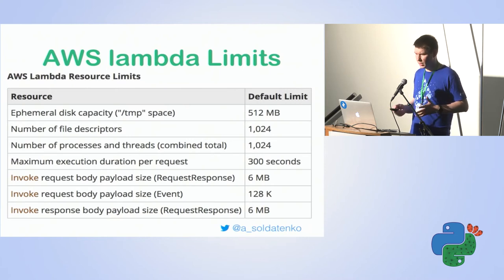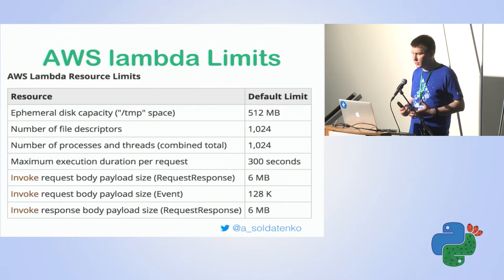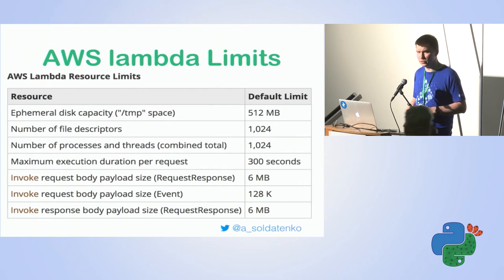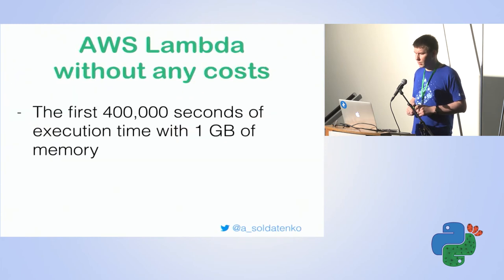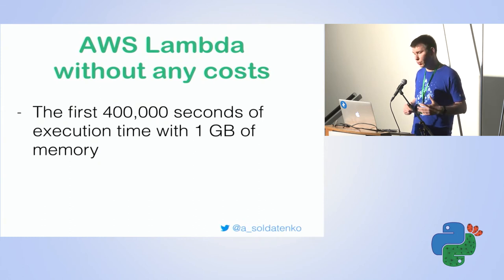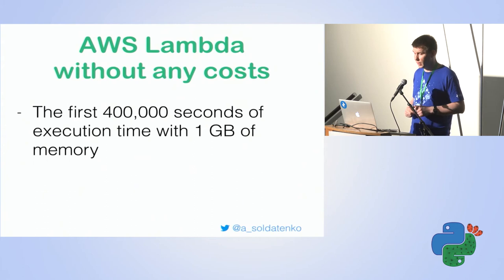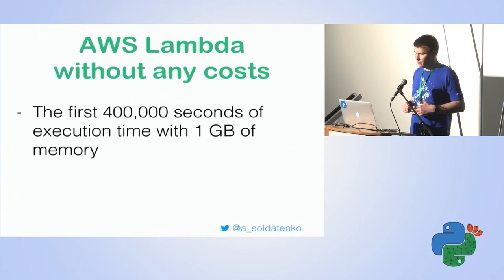Another very important question is limits — what are the limits? How many file descriptors, how many process forks, what's the maximum execution duration? I put all the limitations on this slide and I personally use them to decide whether Lambda is suitable for a project. AWS also provides a free tier: the first 400,000 seconds of execution time are free. You can proportionally adjust these numbers — for example, if you select 128 megabytes of memory, it generates one million and six thousand seconds.